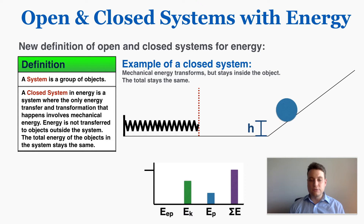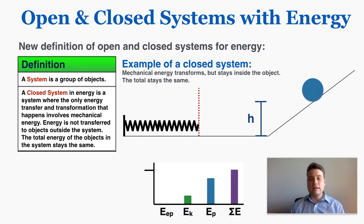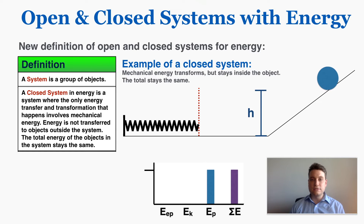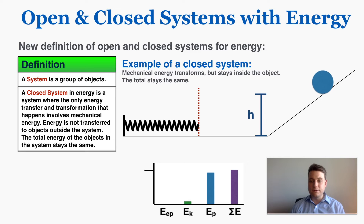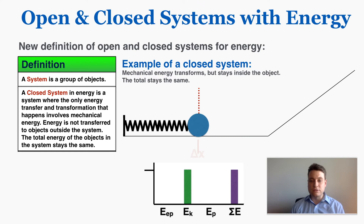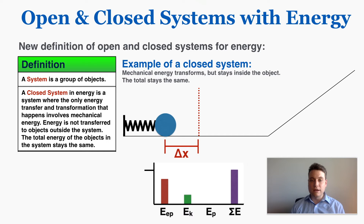If the ball then starts to go up a hill, it loses kinetic energy and gains gravitational potential energy as it rises. Since only a transformation of mechanical energy is happening, the total energy in the system remains the same. When it reaches the top and stops, all of its energy is gravitational potential. Because total energy is conserved, dropping the ball from that same height will compress the spring to the exact same length as before — total gravitational potential at the start equals total elastic potential at the end.